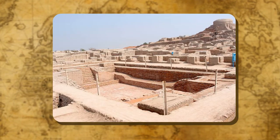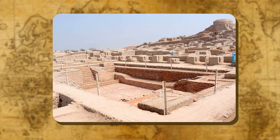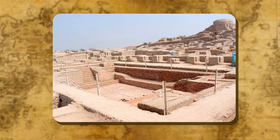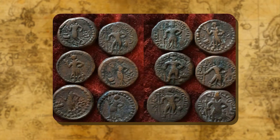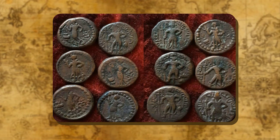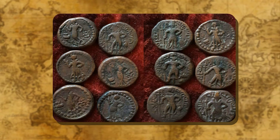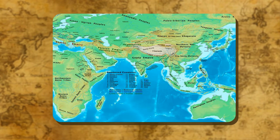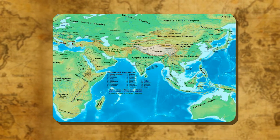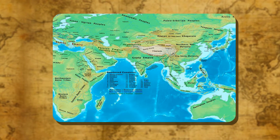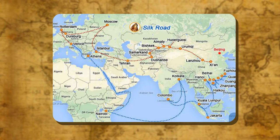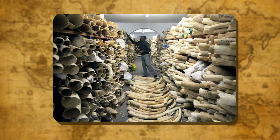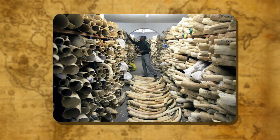Trade and commerce flourished during this period due to the emergence of prosperous towns and development of new crafts. A large number of gold, silver, and copper coins were issued by the Kushanas and Indo-Greek rulers. India had excellent trade relationships with West and Central Asia, namely Rome and China, through the Silk Route. India exported significant items such as silk, ivory, pearls, textiles, and precious stones through this route.